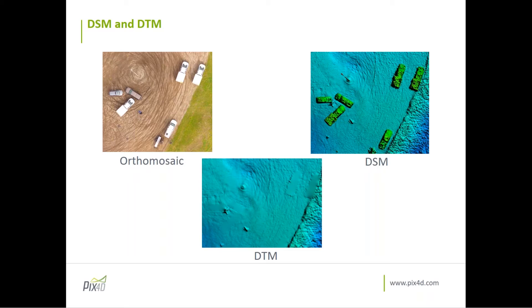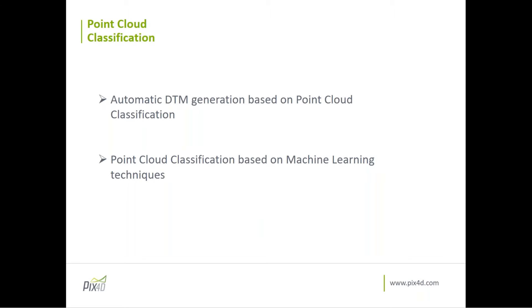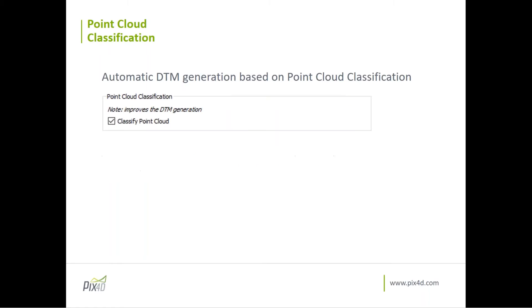In Pix4D we can generate the DTM automatically based on point cloud classification, which uses machine learning techniques. When you run step two, you will see an option to generate the point cloud classification. As soon as you process step two with this option selected, each point will automatically be classified into predefined groups.